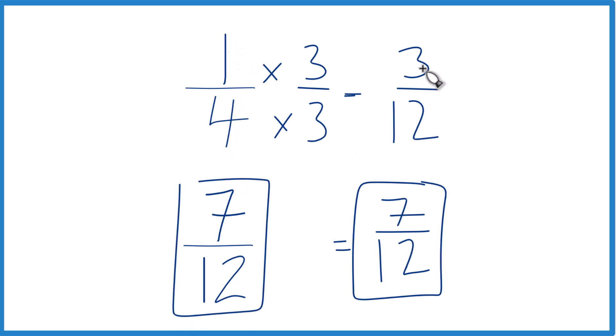And 7 minus 3 is 4, so 4/12 bigger. And you can simplify that down to 1/3.